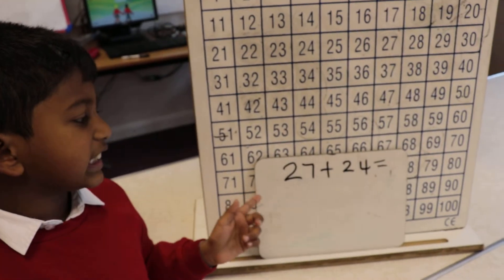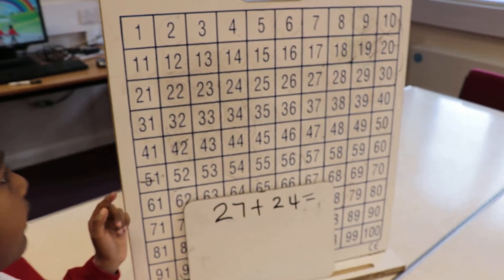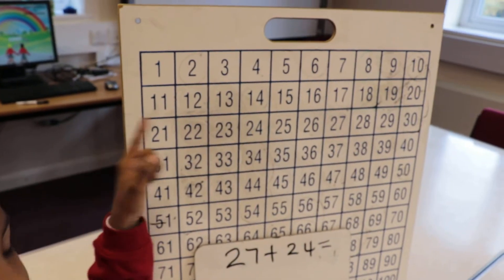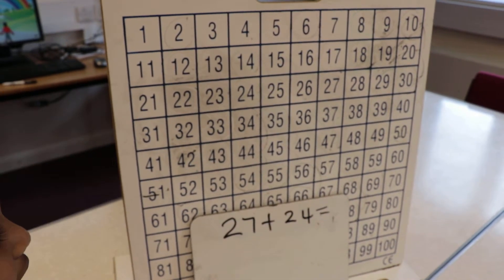I'm going to solve 27 plus 24 on a hundred square. If you go sideways, you will be counting in ones, but if you go down and up, you will be counting in tens.